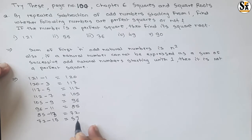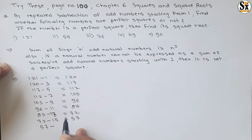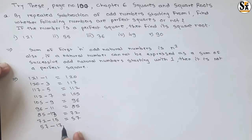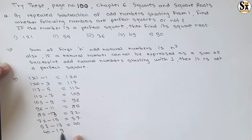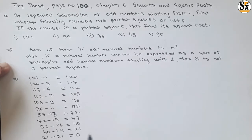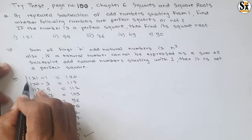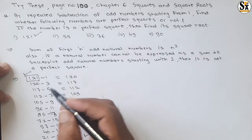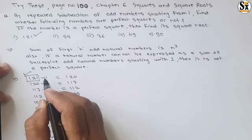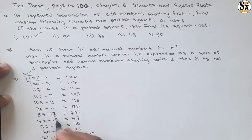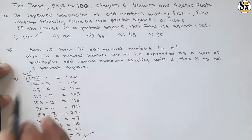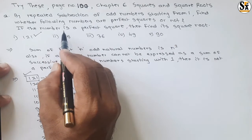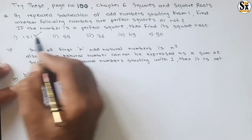Continuing: 96 − 11 = 85, 85 − 13 = 72, 72 − 15 = 57, 57 − 17 = 40, 40 − 19 = 21, and 21 − 21 = 0. We get 0, so 121 is a perfect square. We subtracted consecutive odd numbers starting with 1 and reached 0.